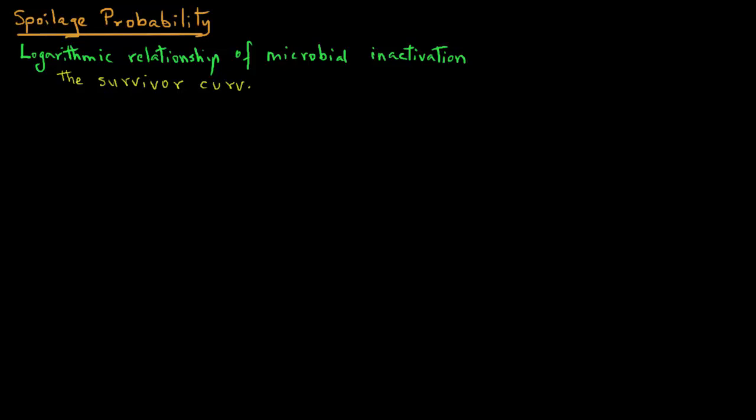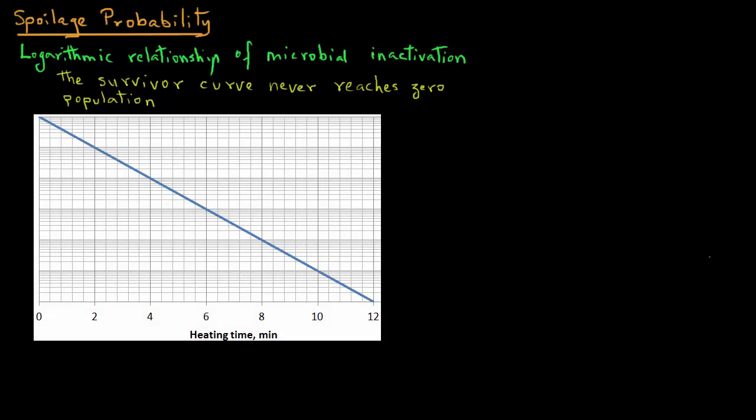And that also means that the survivor curve never reaches zero population. The population can get very, very small, but it will not reach a zero value. So let's take a semi-log plot, and on the y-axis we will plot the number of survivors using a symbol n, and on the x-axis we have the heating time in minutes.